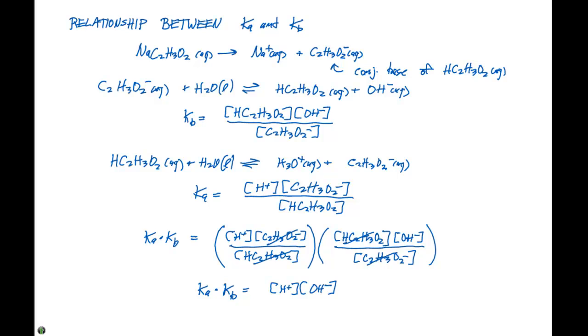Now this expression right here should be familiar to you. Because remember, this is what we refer to as the Kw, which is going to equal 1 times 10 to the minus 14. So, the key relationship that we're going to see here is we know that the Ka times the Kb is going to equal the Kw.